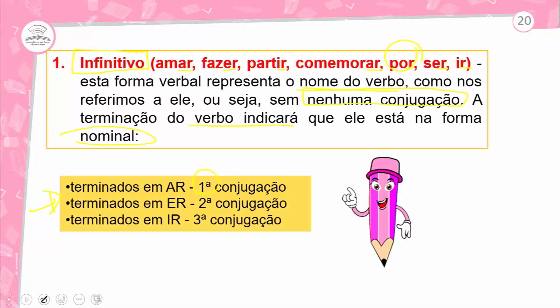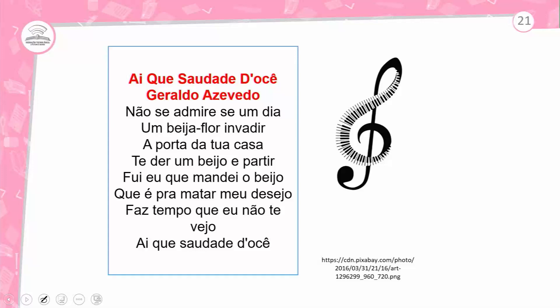Quando você perceber que o verbo termina em A, faz parte da primeira conjugação. Terminado em E, segunda conjugação. Terminado em I, terceira conjugação. Por exemplo: a professora Márcia canta — percebe-se a vogal temática 'a', indicando a primeira conjugação. Assim como falar, cantar, dançar, gritar — todos fazem parte da primeira conjugação.